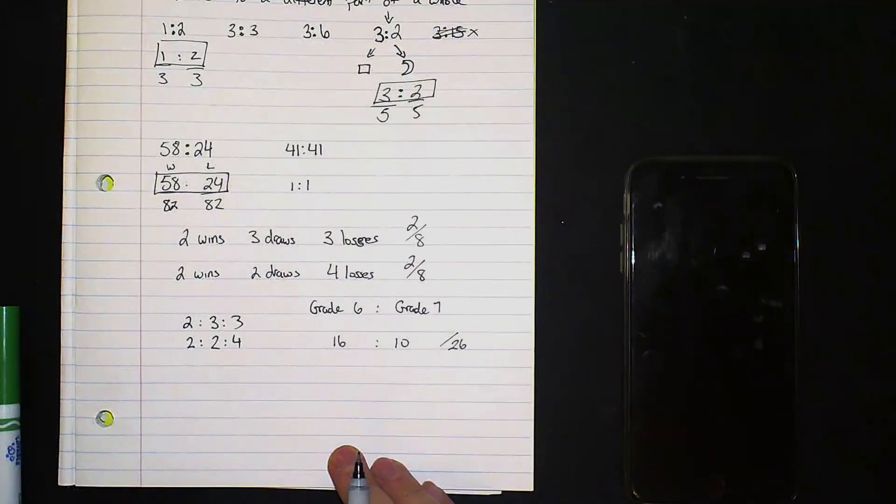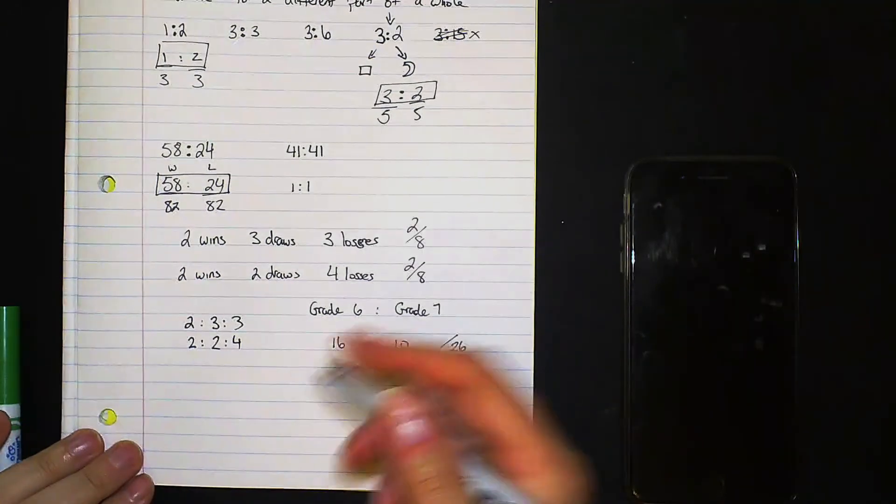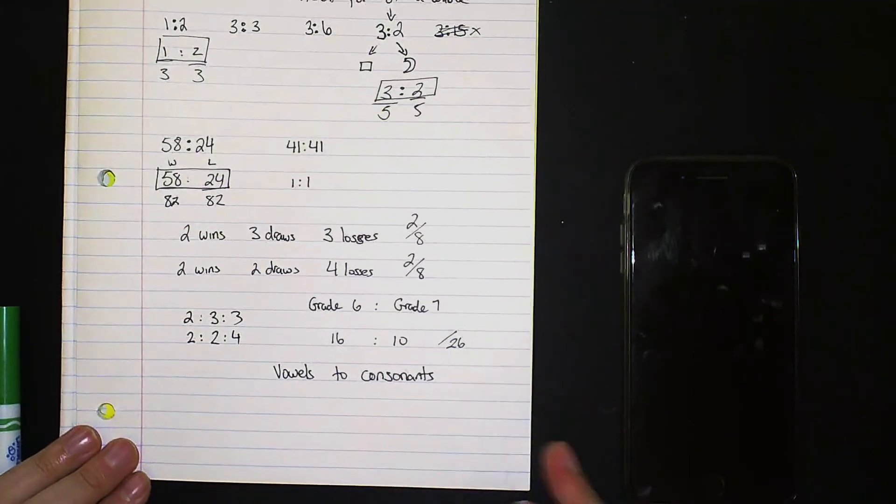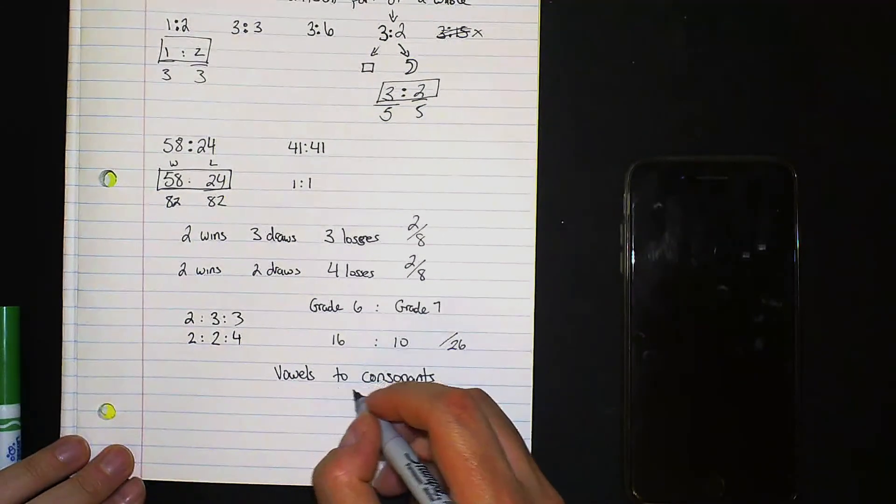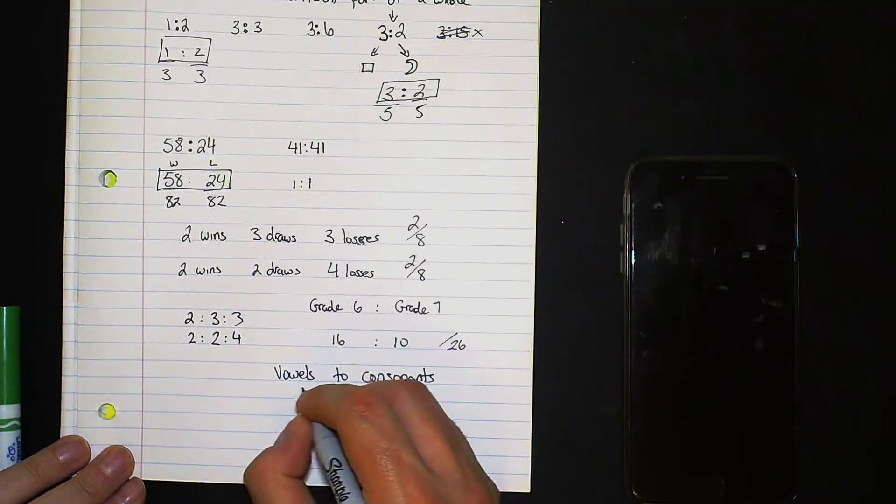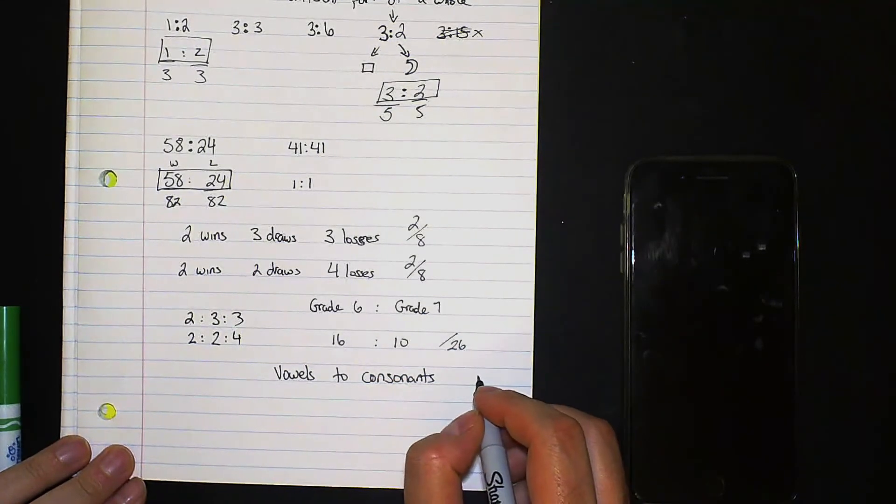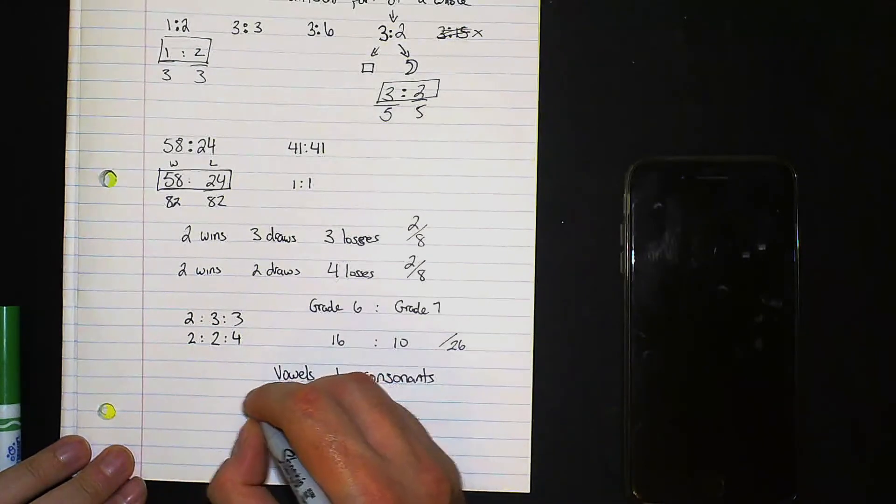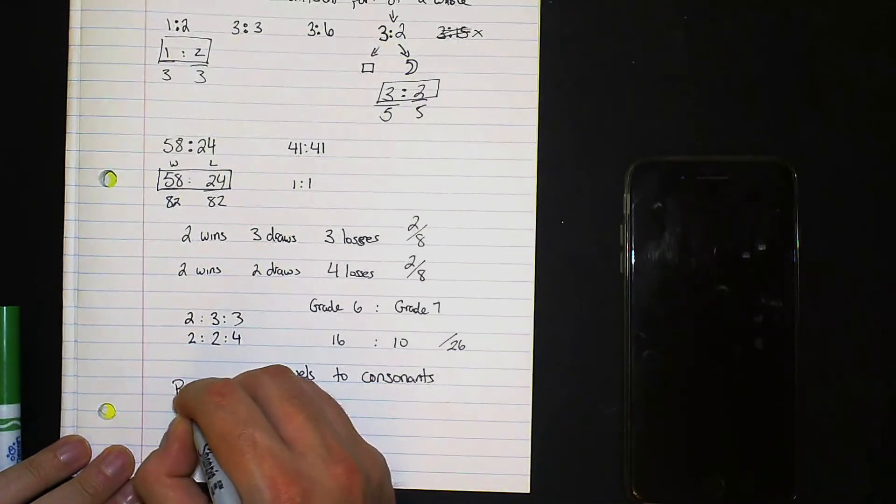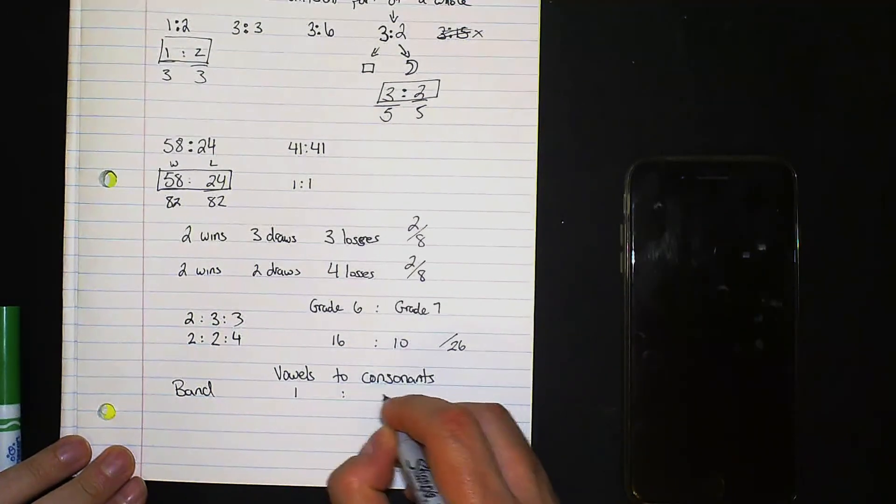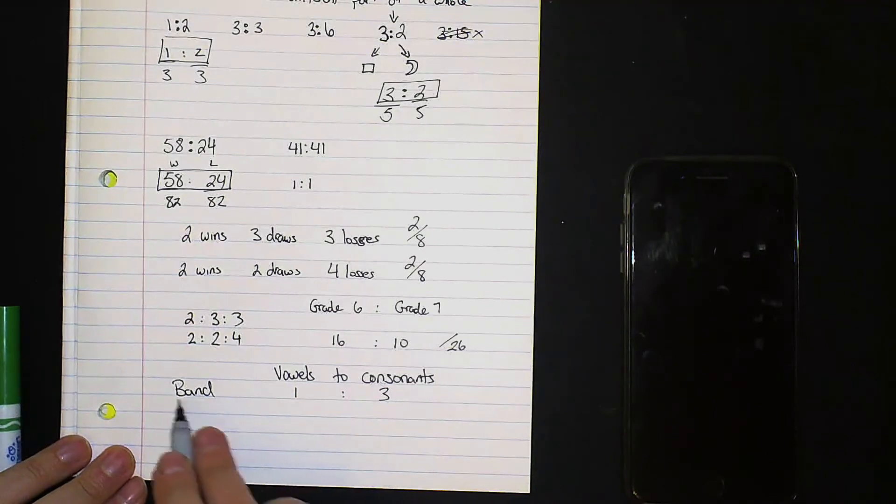Another one I can give you is you'll see this a lot in your examples, vowels to consonants. What is that? Well we all know what a vowel is. Vowel is A-E-I-O-U and consonants are all the other letters. So if we took the word band and we had to compare vowels to consonants, well one is a vowel, three are consonants. There are four letters in the word band, right?